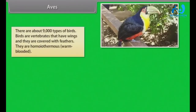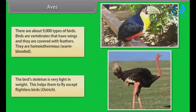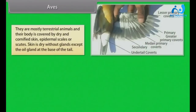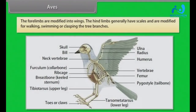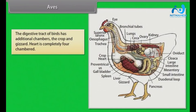There are about 9,000 types of birds. Birds are vertebrates that have wings and are covered with feathers. They are homeothermous or warm-blooded. The bird's skeleton is very light in weight, which helps them fly, except flightless birds such as Ostrich. Skin is dry without glands except the oil gland at the base of the tail. Endoskeleton is fully ossified (bony) and the long bones are hollow with air cavities (pneumatic). The forelimbs are modified into wings. The hind limbs generally have scales and are modified for walking, swimming or clasping tree branches. The digestive tract of birds has additional chambers: the crop and gizzard.